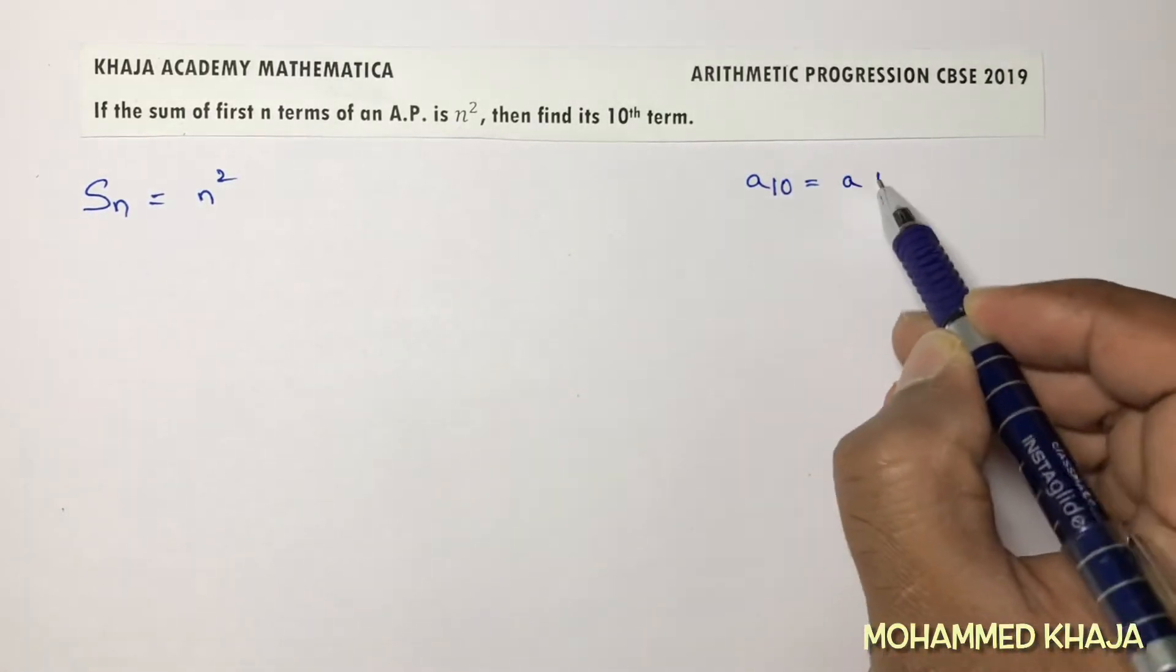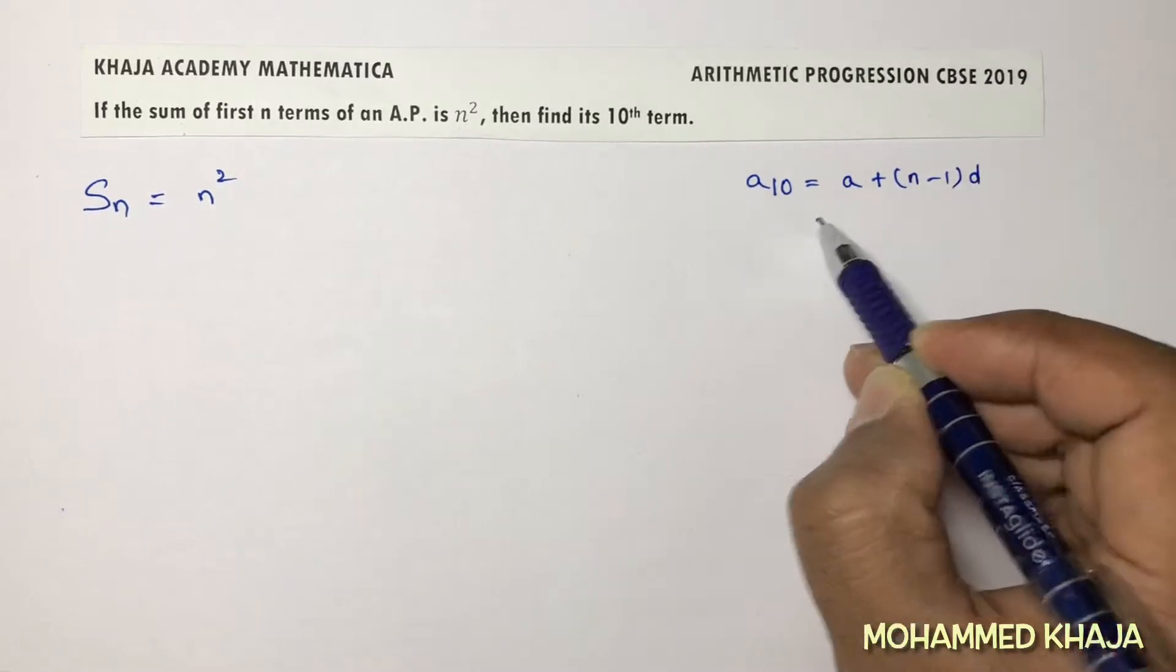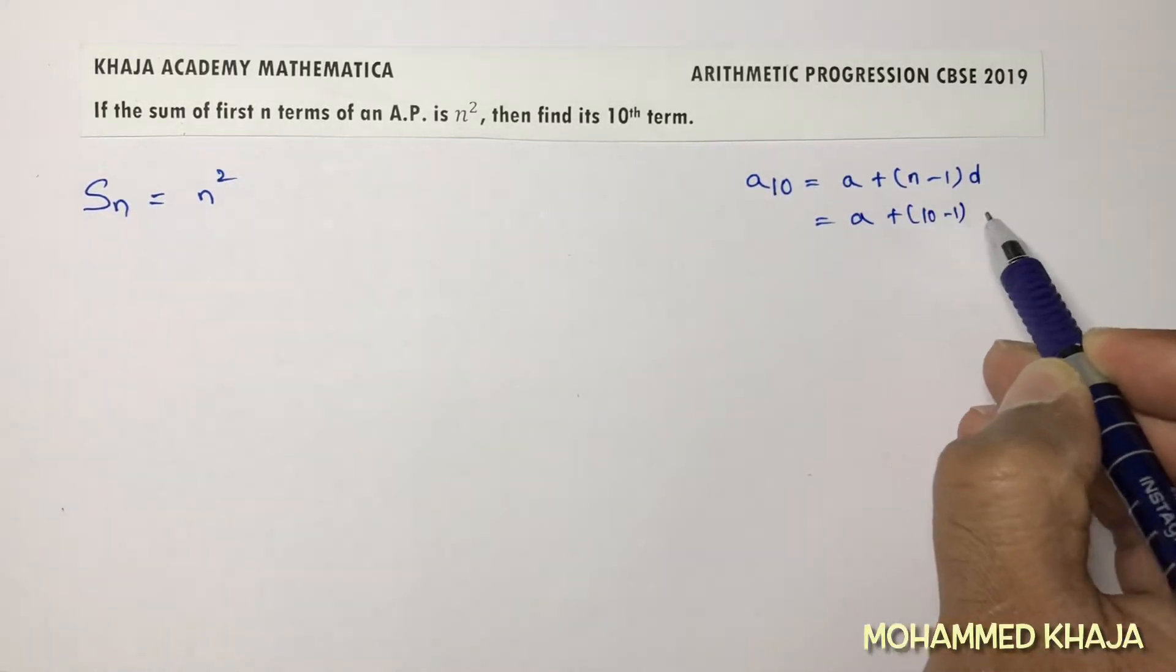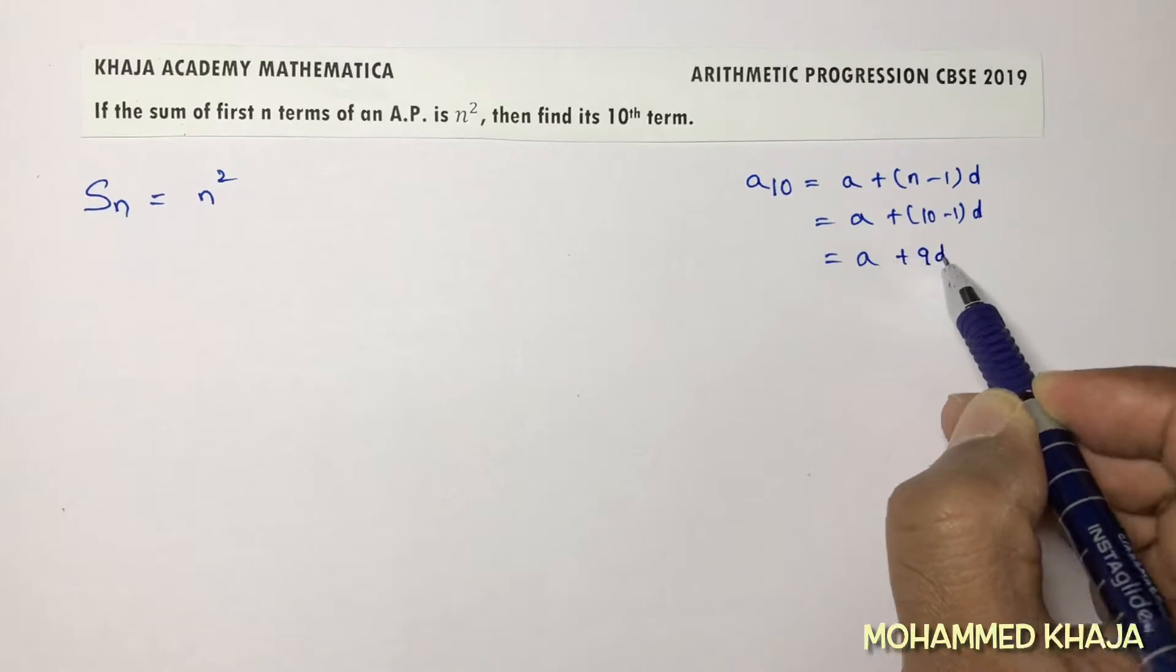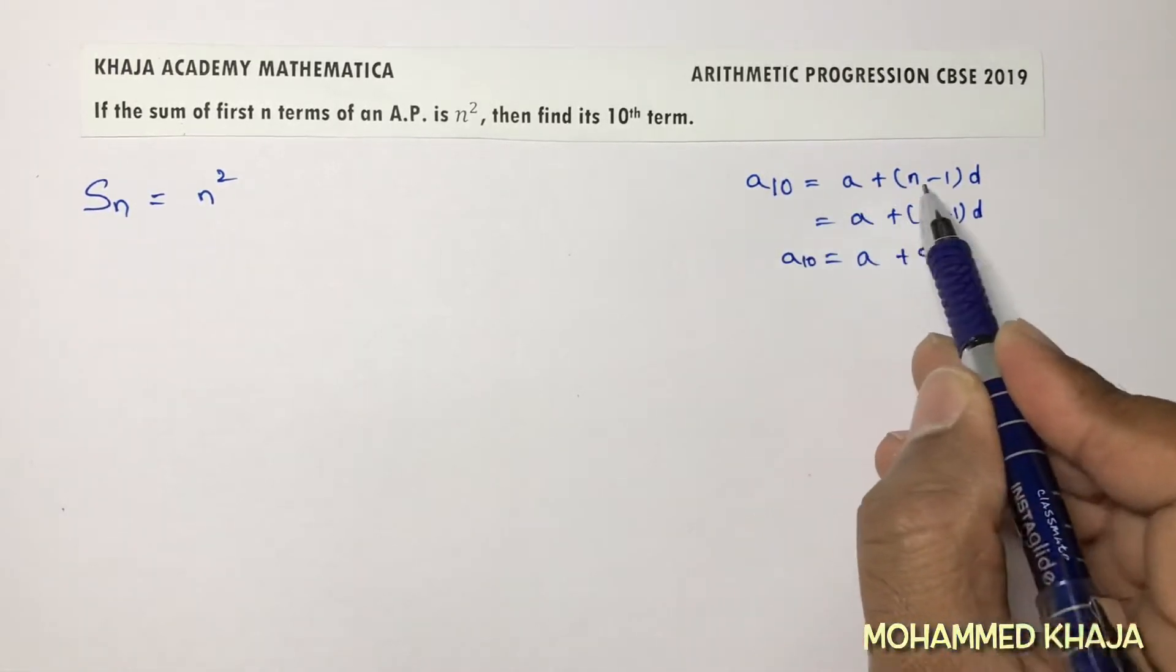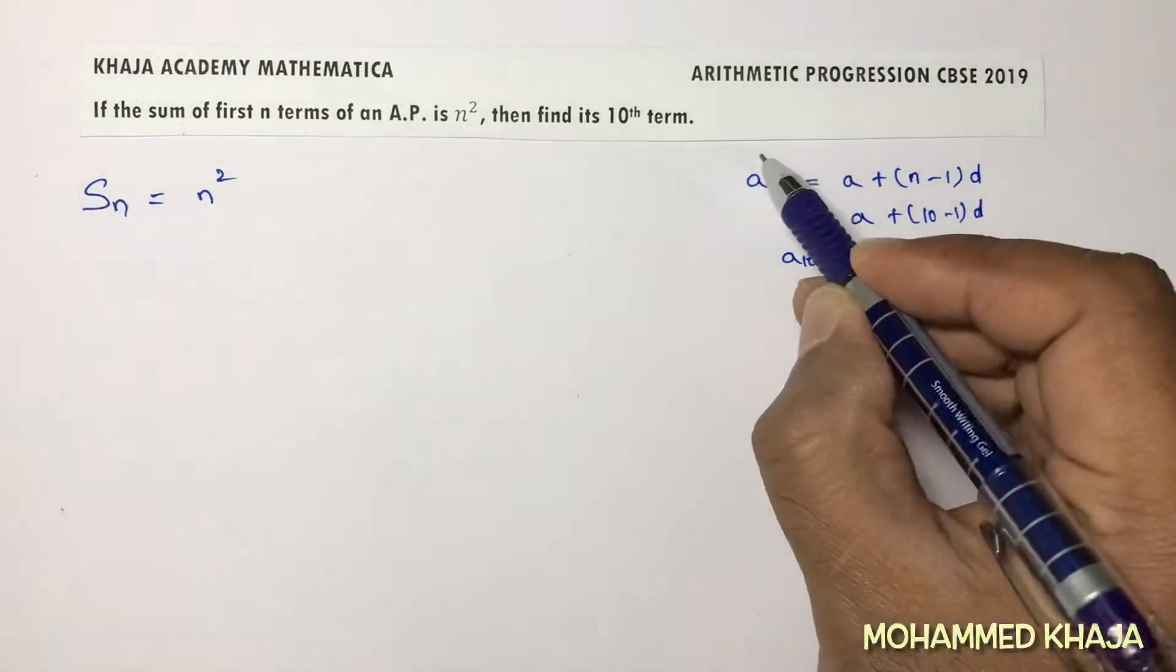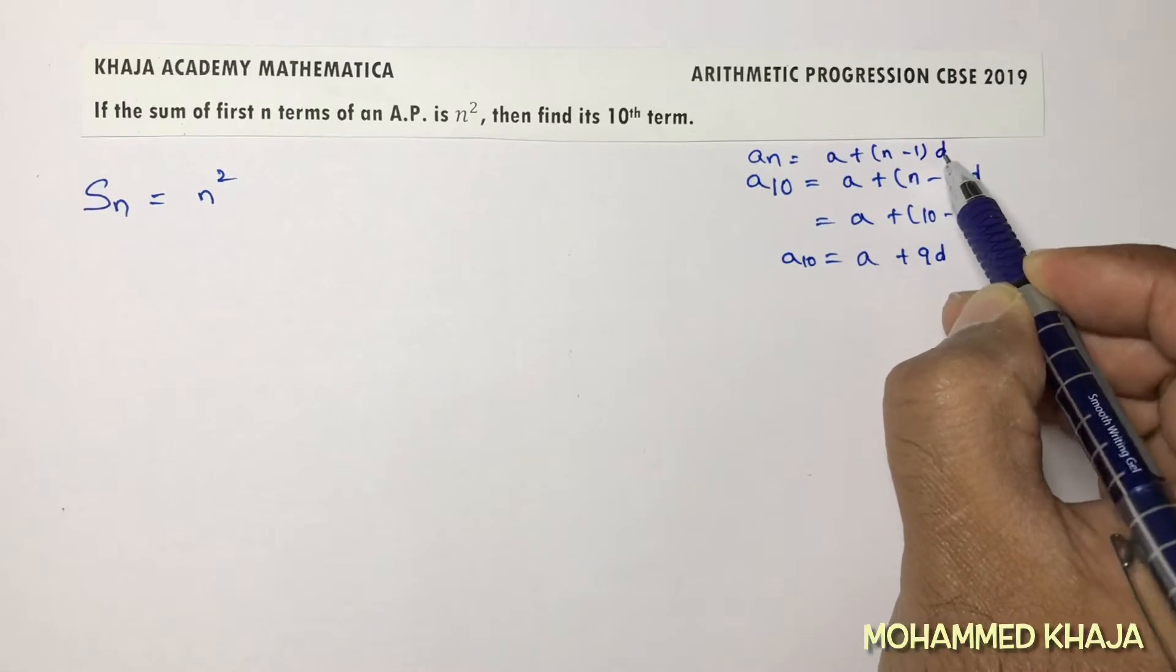The 10th term is a plus n minus 1 into d. So a plus 10 minus 1 into d, which is a plus 9d. A₁₀ is a plus 9d. The formula for Aₙ is a plus n minus 1 into d.